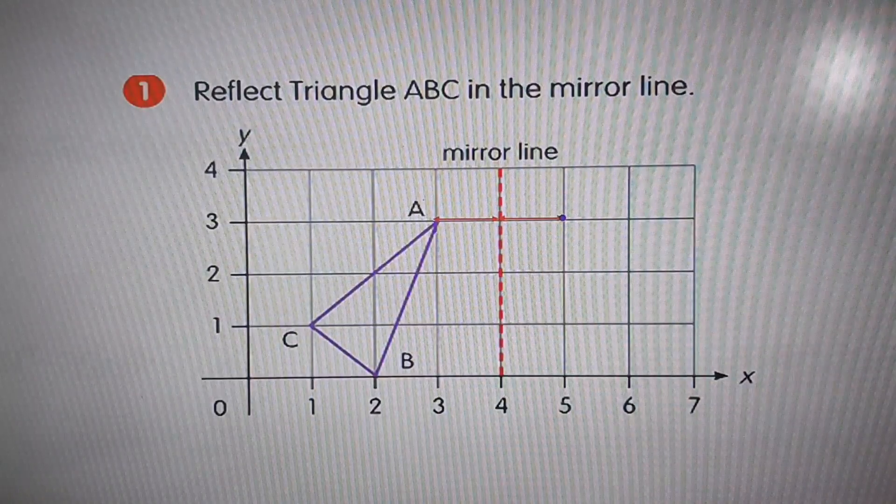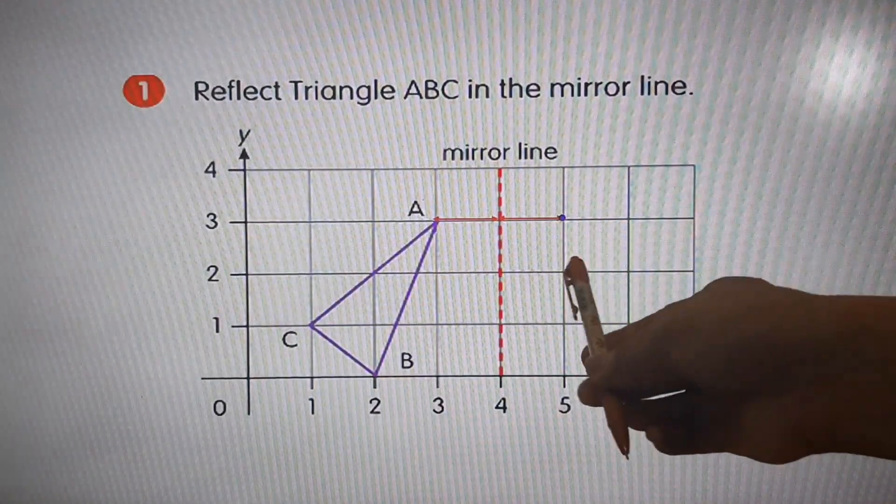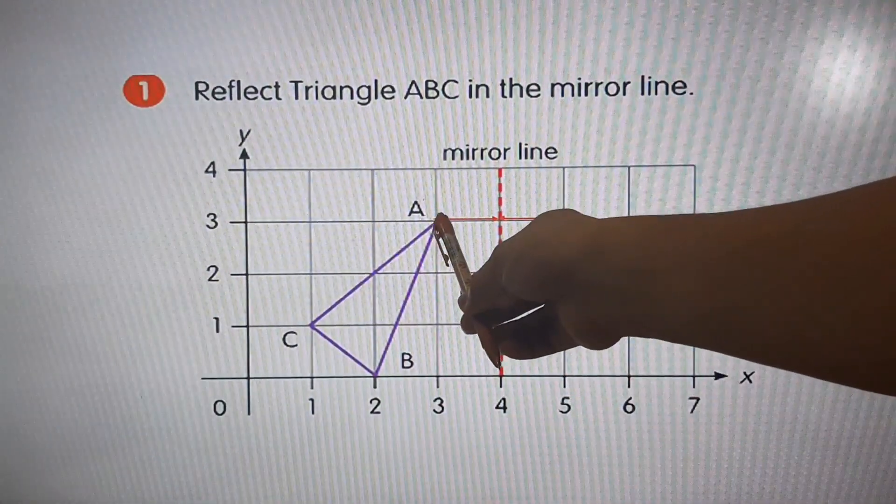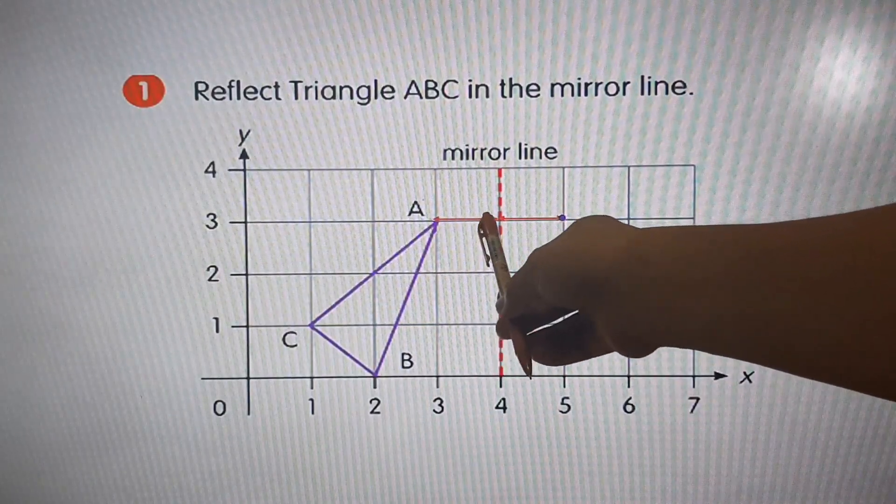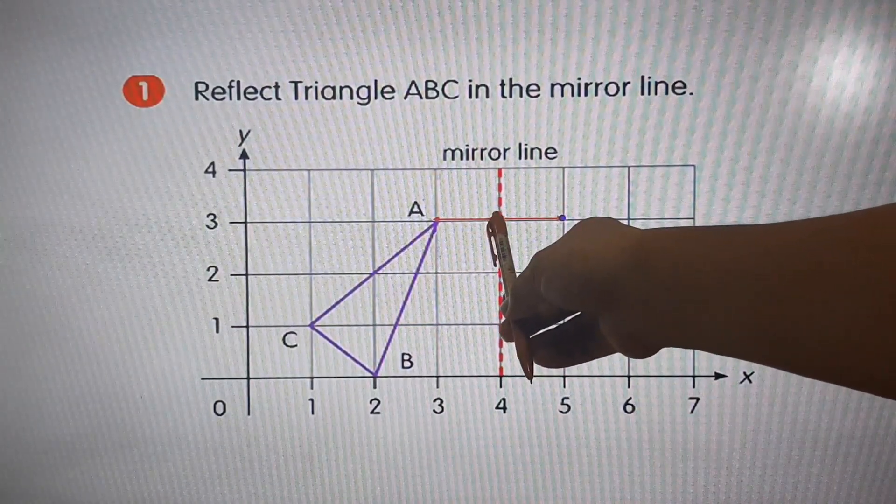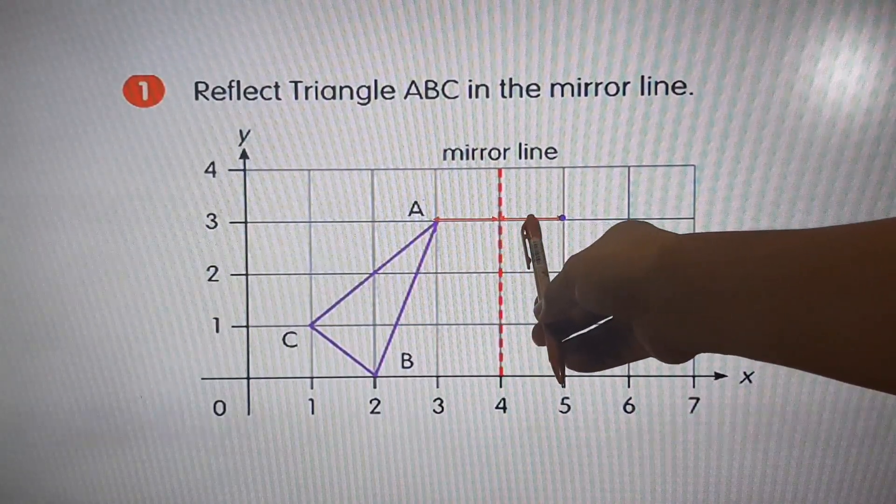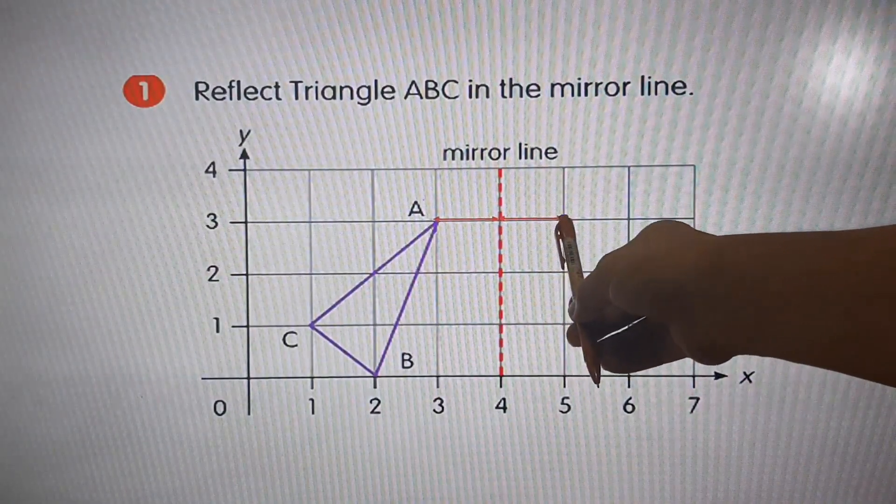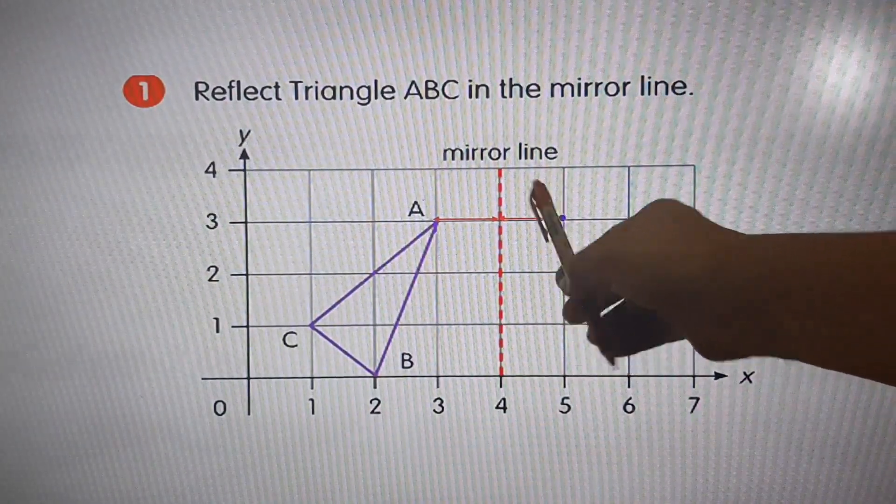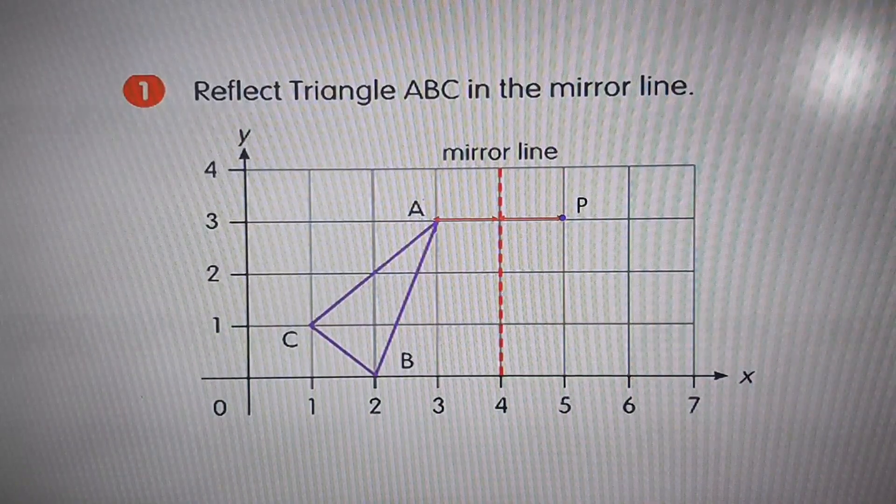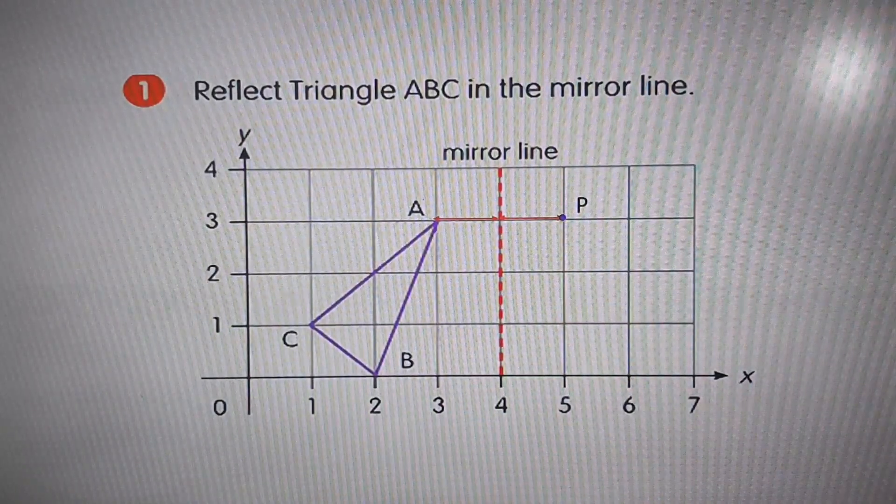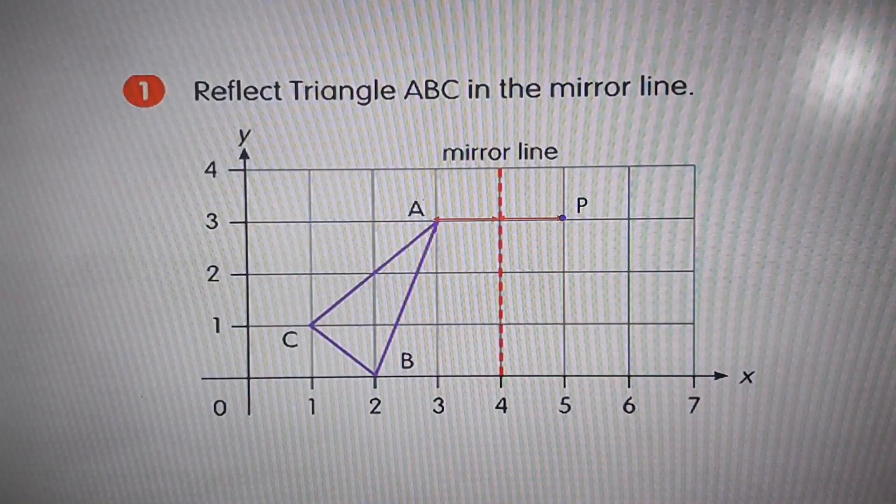Now, make sure that the distance of point A to the mirror line is equal to the distance of its image point, which is point P, to the mirror line. Is that clear?